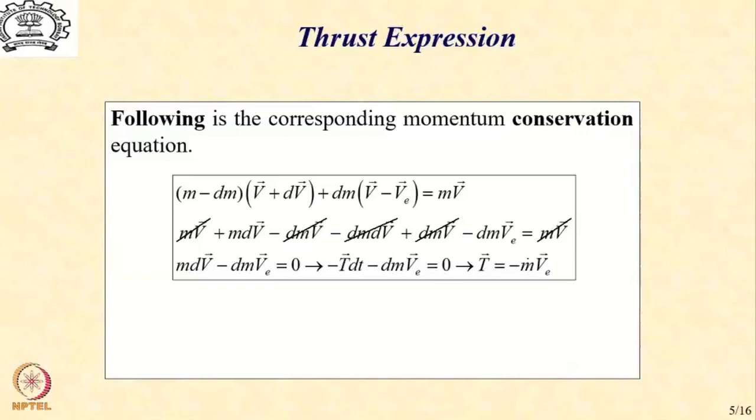Because this change in momentum results in a force in the forward direction, we hypothesize the presence of a force called thrust shown as T in this equation. Then we have an expression for thrust as -ṁ·v_e. The negative sign indicates that ṁ is a negative quantity because relative to the rocket, we are losing mass, so rate of change of mass is negative.